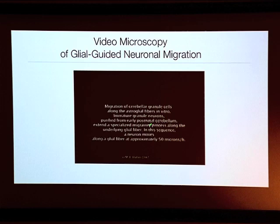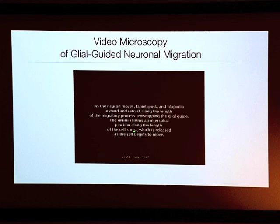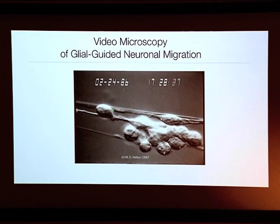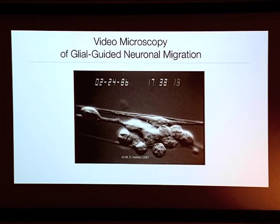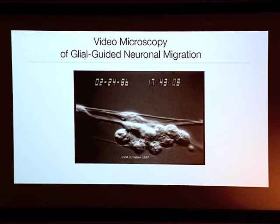The immature cells extend a leading process and then move along. Little lamellipodia and filopodia — small projections of the cell — wrap around the glial process as it goes. Here's the nucleus in the back of the cell and the leading process. The cell has a junction underneath where it's sticking onto the glial fiber, and then it lets go and the cell glides along the glial process, making another step. This happens every three minutes, and all of the brain cells in your brain were put into place by that delicate little movement of the cell migrating.